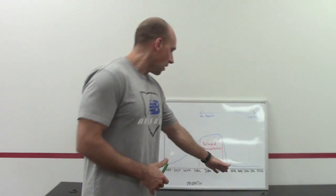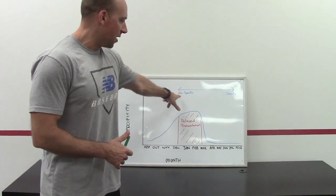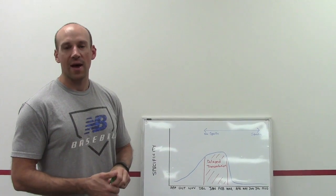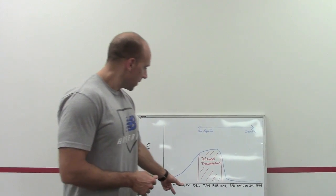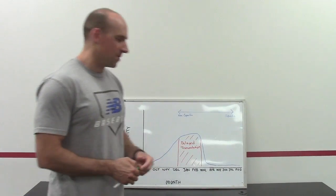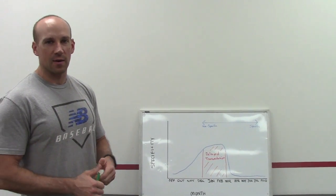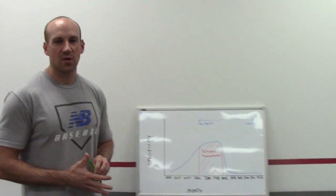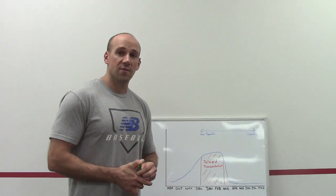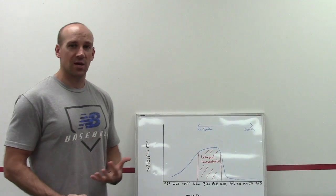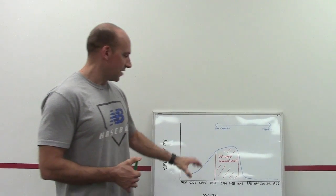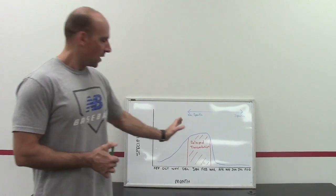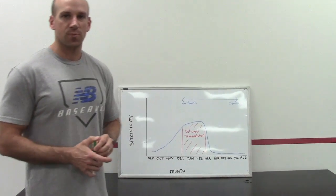So instead we keep our volume up with respect to the nonspecific exercises, but we don't need to do a whole bunch of extra long toss, weighted balls, stuff like that during the season for guys. So this is kind of like the ideal curve you want to see, but there is going to be some variability about it. And what we have to understand is this concept of delayed transmutation. This was introduced by Vladimir Zatsiorsky in the science and practice of strength training. And what delayed transmutation really is, is just taking that general motor potential that you build with a lot of those less specific exercises and we want to transfer them into sports performance.